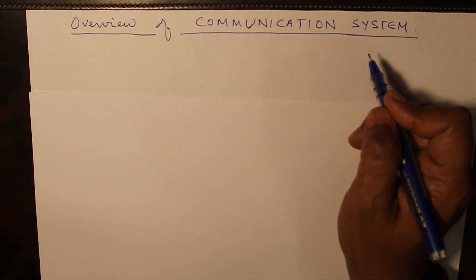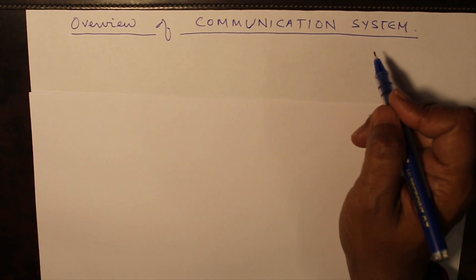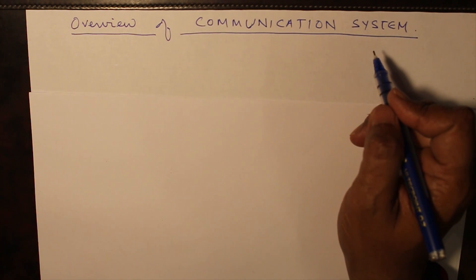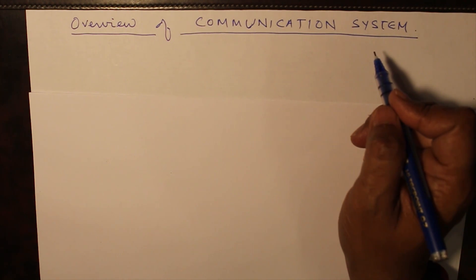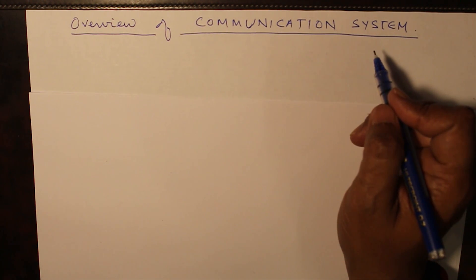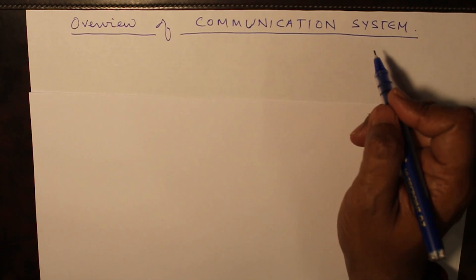What are the components involved in making a communication system? We will consider what is the block diagram, what is the signal that we transmit from one place to another to convey information — whether it is radio signals, TV signals, or mobile signals. Whatever signal is being transmitted, everything is part of the block diagram of a communication system.